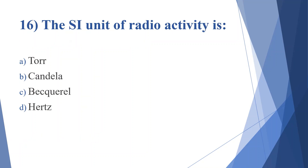Sixteenth question: the SI unit of radioactivity is. Option A: Tor. Option B: Curie. Option C: Becquerel. Option D: Rads. Answer is option C, Becquerel.